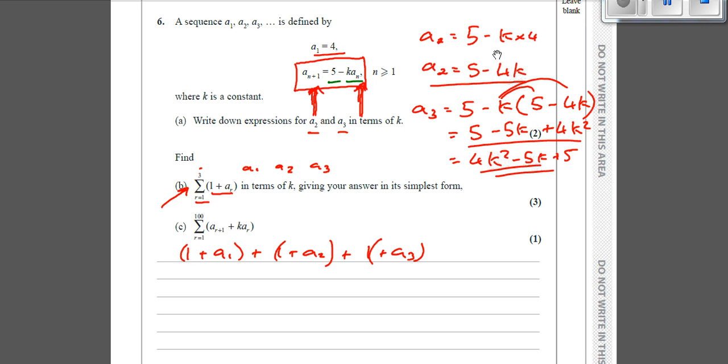This here means the sum of. We've got to add up the first one when r is 1, the second one when r is 2, all the way up to r equals 3. So 1 plus a1, we knew was 4, so that's going to be 1 plus 4. Plus 1 plus a2, a2 was 5 minus 4k, so 1 plus 5 minus 4k.